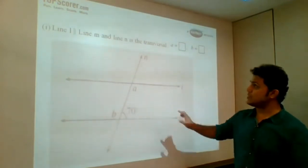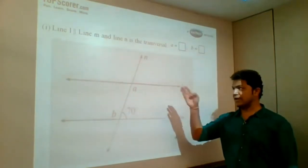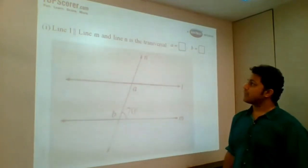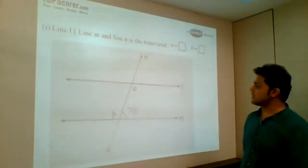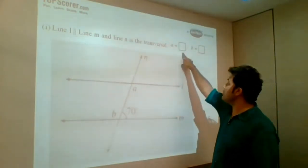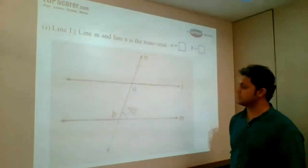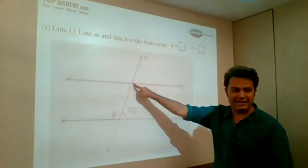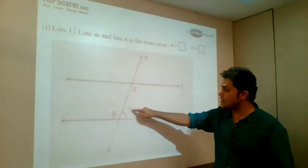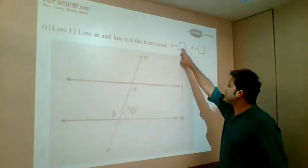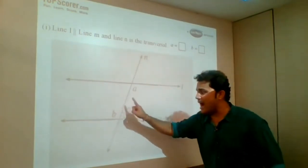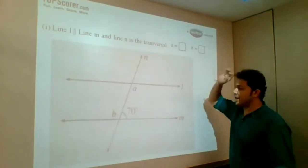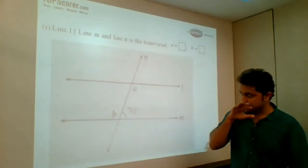Let's look at this question. This is again from geometry. Line L is parallel to line M, and line N is the transversal. What is the value of A and B you need to write in the box? Obviously A is going to be 110 because interior angles are supplementary. So you write A as 110. A and B are alternate angles, so B will also be 110.